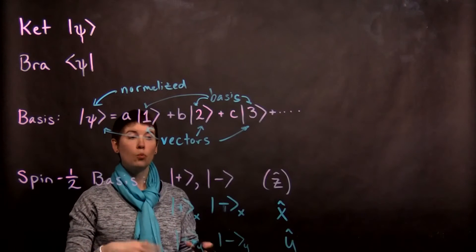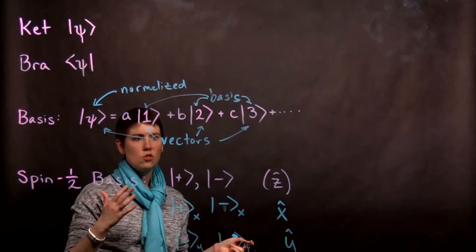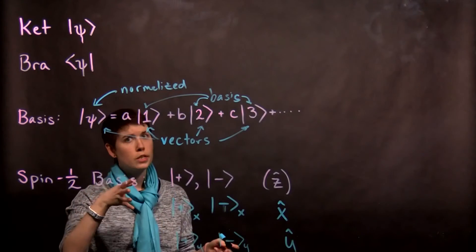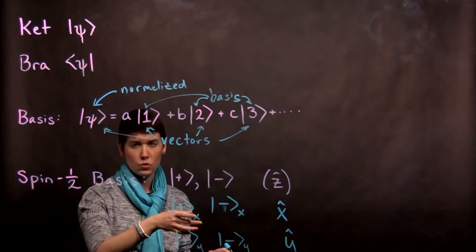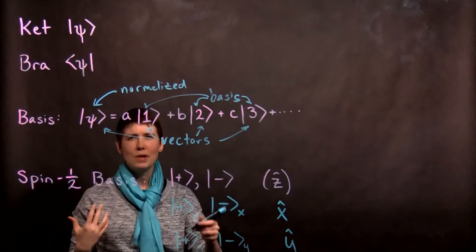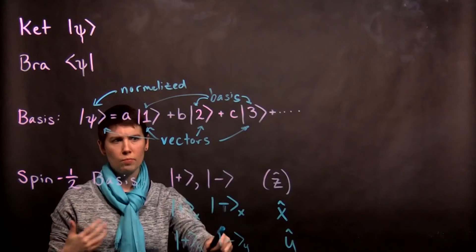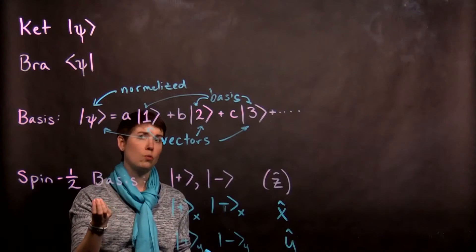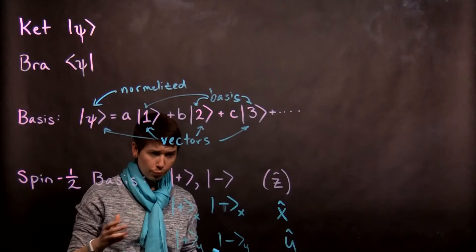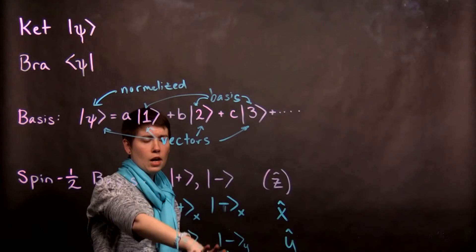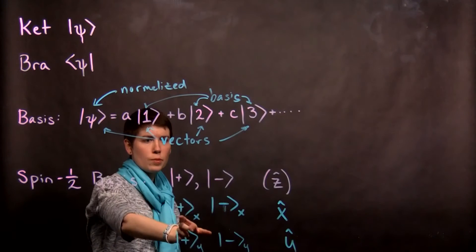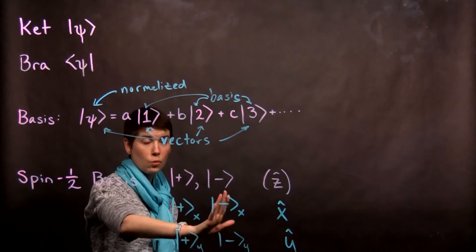There are going to be cases where you're working initially in your x basis. Maybe your operator is expressed in the x directional basis. In which case you might want to write the z subscripts to make it clear when you're starting to work with a z basis. So please note that we write this to mean spin up and spin down in our x and y directions.